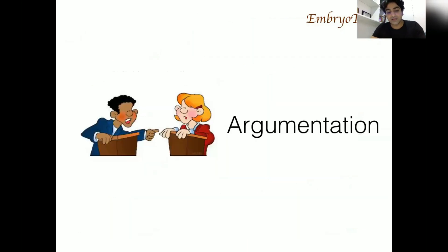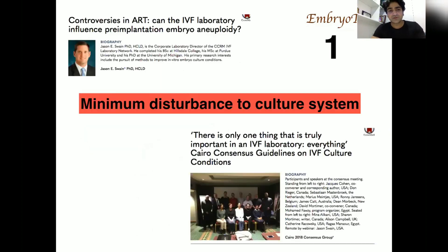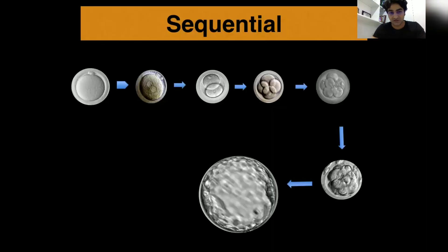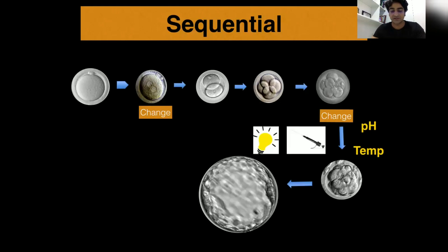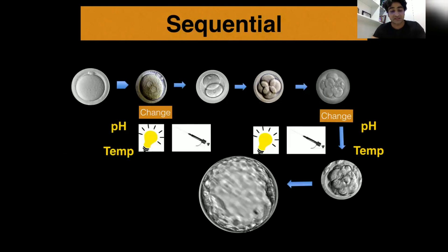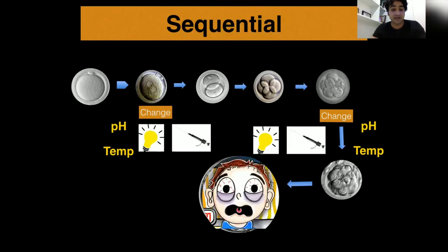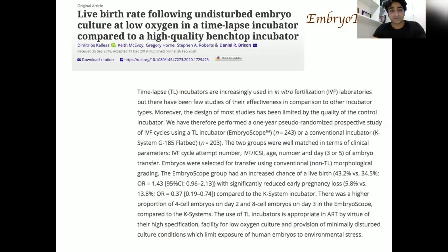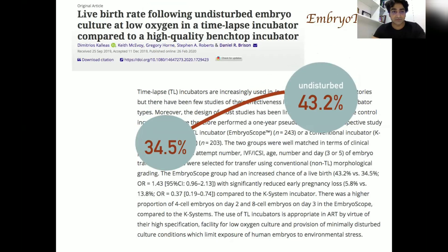Moving to the practical arguments for day-to-day lab use: the first argument, supported by multiple consensus documents and papers, is the principle of minimum disturbance to the culture system. In sequential media, we change the media twice, causing changes in temperature, pH, and physical stress on the embryos. A 2019 study showed that an undisturbed culture condition in a high-quality bench-top incubator can achieve a higher live birth rate of around 43.2%.